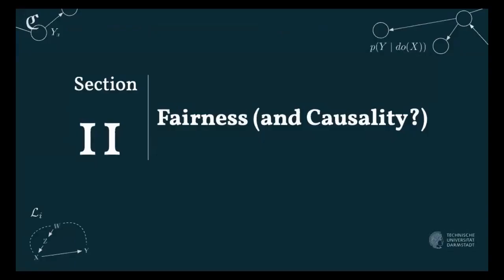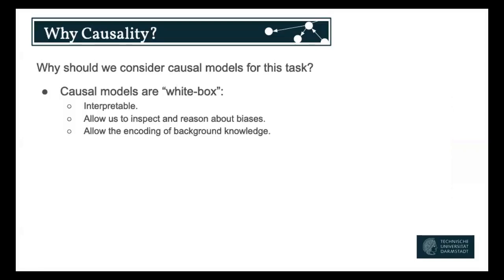So the question is: how can causality help us with that? To employ causality for machine learning, we want to use the fact that causal models are white box — we can inspect and reason about their biases, and encode explicit background knowledge into them. This is difficult with neural networks or other black box models. We want to use causal models both to make predictions and to constrain and train neural networks.